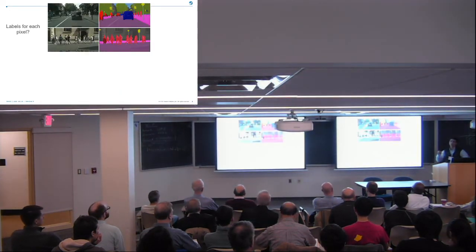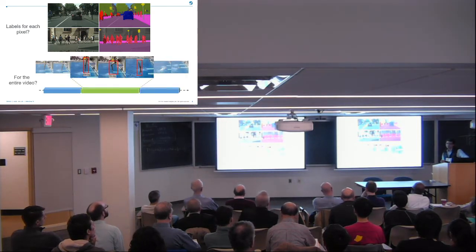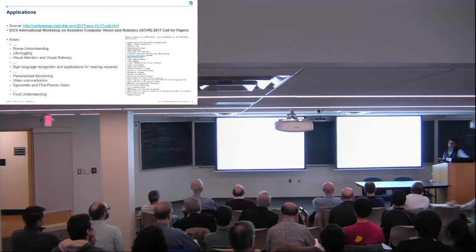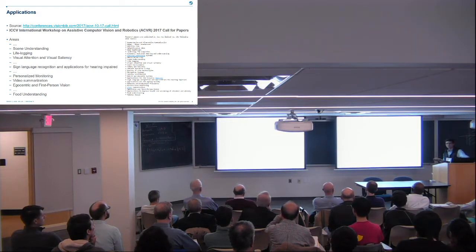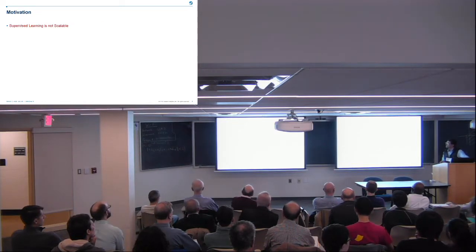Consider: ImageNet required labels per image. But what if you want labels per pixel? You have a million pixels per image, so you multiply the labeling task by a million. What about video? Suddenly you have a huge amount of data. And you have to multiply that by the number of application areas. Computer vision is about visual understanding of anything we can do with our eyes — there are a huge number of tasks, and we cannot get labeled data for all of them.